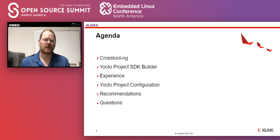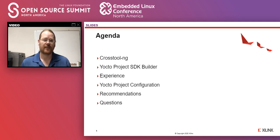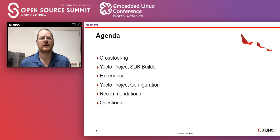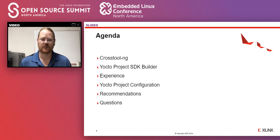I'm going to quickly go over what Cross Tool NG is, what the Yocto Project SDK builder is, how this can work, and what works with bare metal tool chains. The important part is my experiences doing this and how we got into the Yocto Project configurations for the bare metal tool chains. Finally, recommendations on whether you should even do this, and if so, when is the right time to consider a switch.